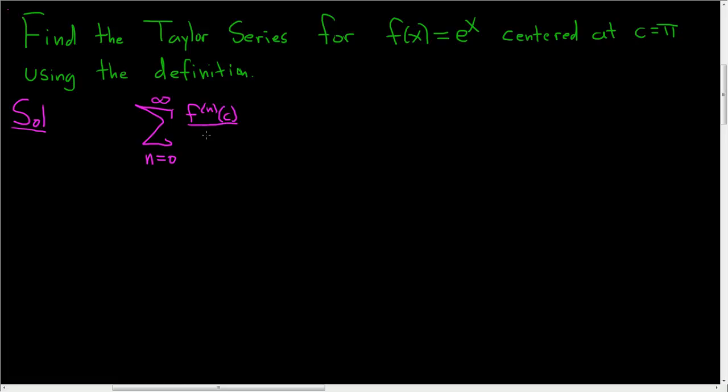divided by n factorial, times (x - c)^n. So all we have to do is use this formula and we're done.